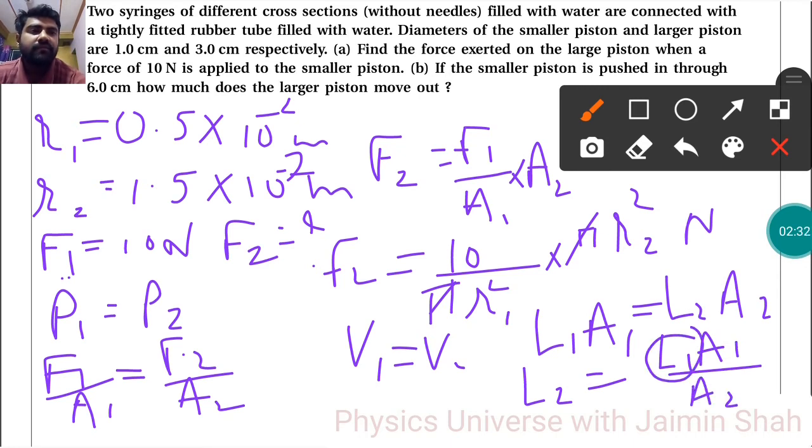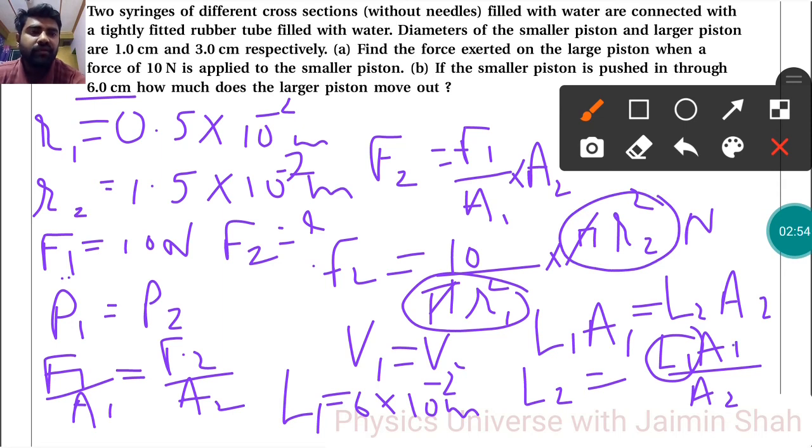Now L1 we have, that is 6 centimeter. We have to convert it into meter, so L1 will be, here I am writing that, 6×10^-2 meter. A1 again π r1 square, A2 again π r2 square. So here r1 square upon r2 square.